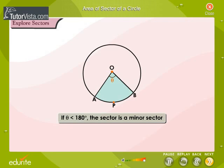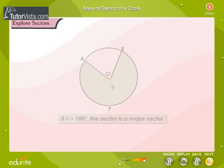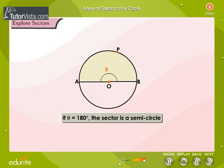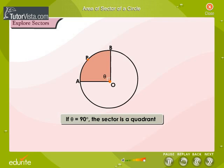If theta is less than 180 degrees, the sector is called a minor sector. If theta is greater than 180 degrees, the sector is called a major sector. If theta is equal to 180 degrees, the sector is called a semicircle. If theta is equal to 90 degrees, the sector is one-fourth of the circle and is called a quadrant.